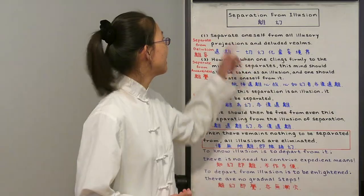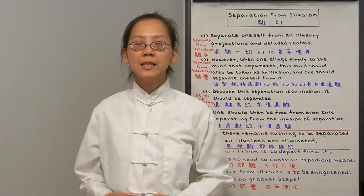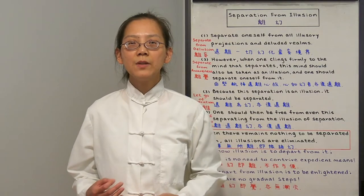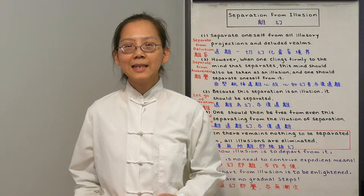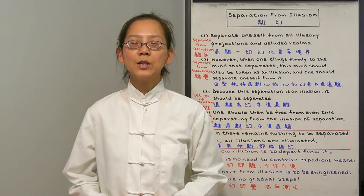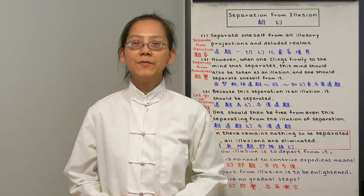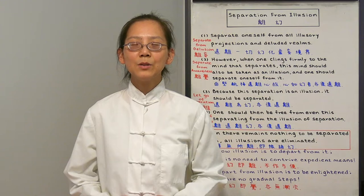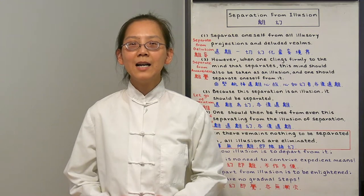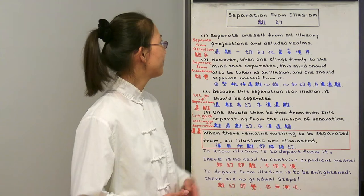Today we are going to talk about separation from illusion. Buddha says to separate from illusion is to be enlightened. We will use the Perfect Enlightenment Sutra together with the Shurangama Sutra to understand enlightenment. In the Perfect Enlightenment Sutra, there are actually 4 steps to the separation from illusion.